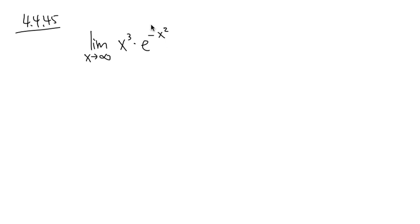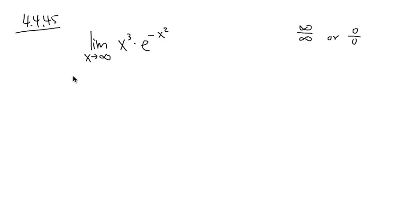Notice that this is not a fraction yet. In order for us to use L'Hôpital's rule, our goal is to either get infinity over infinity or a zero over zero situation — that is the L'Hôpital's rule indeterminate form. This is not a quotient yet, but notice that we have e to the negative exponent, so we can bring this down to the denominator.